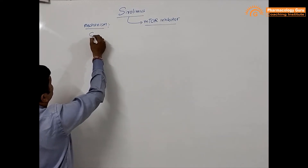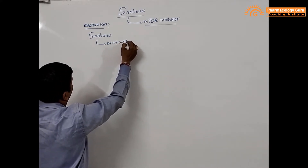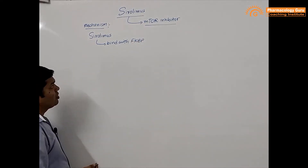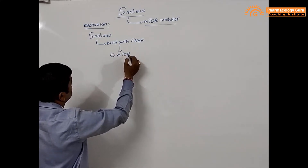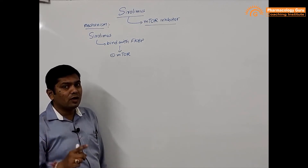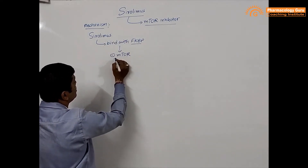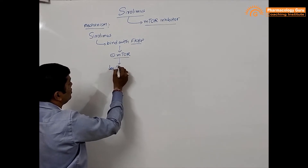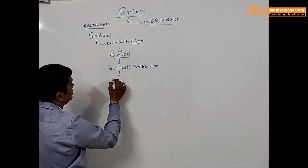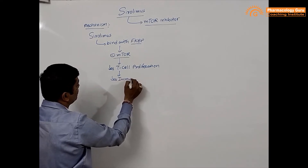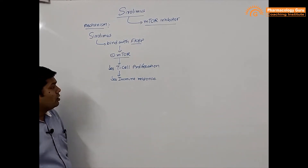The mechanism of action: when Sirolimus is given, it binds with the FKBP — that is FK506 binding protein — and because of that, it inhibits the enzyme mTOR. Tacrolimus also binds with FKBP, but their binding sites are different. Sirolimus binds with FKBP and inhibits mTOR, thereby inhibiting T-cell proliferation, which reduces the immune response and gives it immunosuppressive properties.